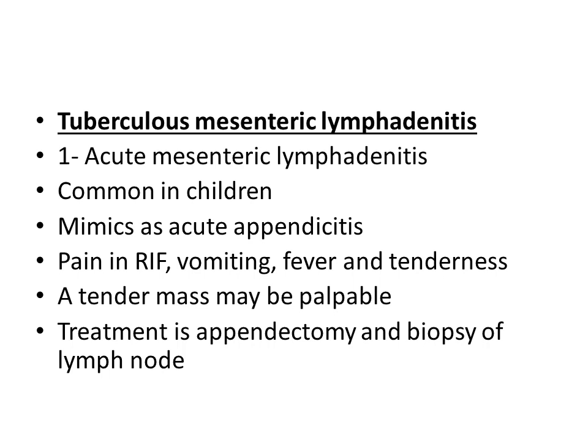Tuberculosis mesenteric lymphadenitis is the second most common type. It may be acute mesenteric lymphadenitis, which is common in children and mimics acute appendicitis — with pain in the right iliac fossa, vomiting, fever, and tenderness. A tender mass may be palpable in the right iliac fossa. In children, usually we perform appendectomy because the clinical diagnosis is appendicitis. When we open and find enlarged mesenteric lymph nodes, an excision biopsy of the mesenteric lymph node should be taken alongside the appendectomy.